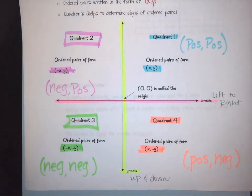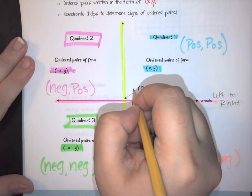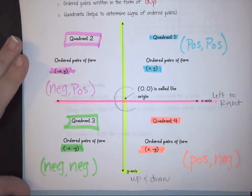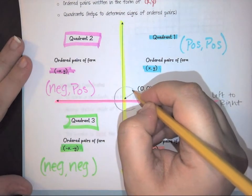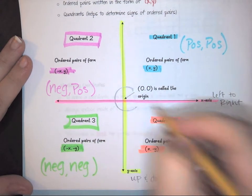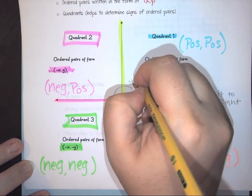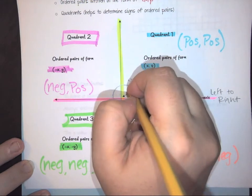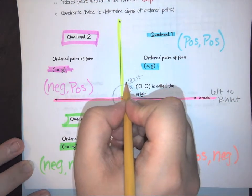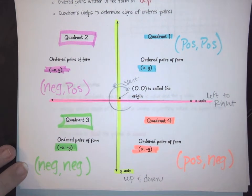The easiest way to remember how to label the quadrants is to always start at quadrant one — and your trick is you're drawing a C shape. Notice you can see the C shape here. We start from this side and travel around in this direction, so as long as you do that every time, you'll be able to label your quadrant points correctly.